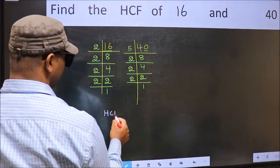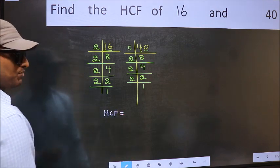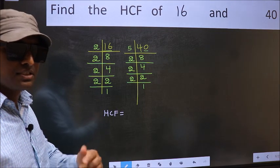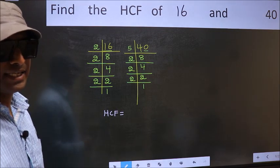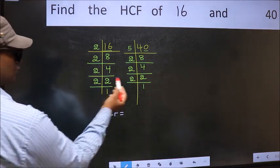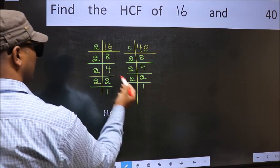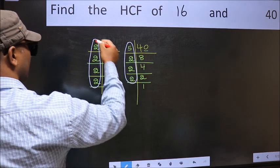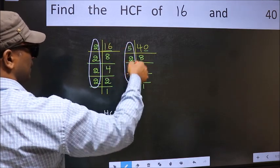Therefore our HCF is the product of the numbers which should be present in these two places. That is here and here. Here and here.